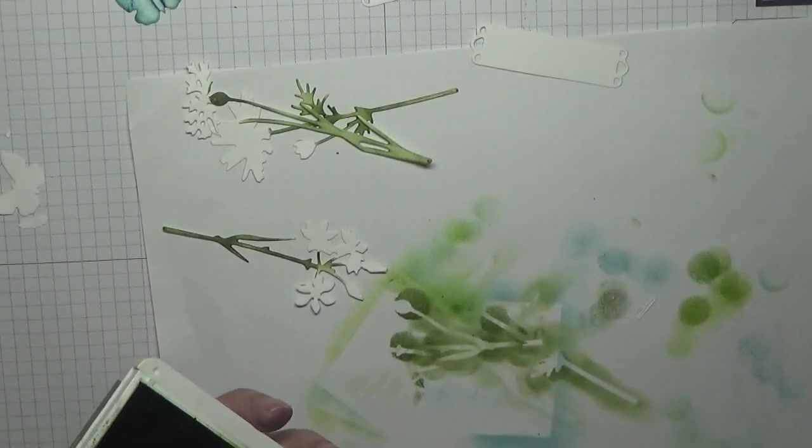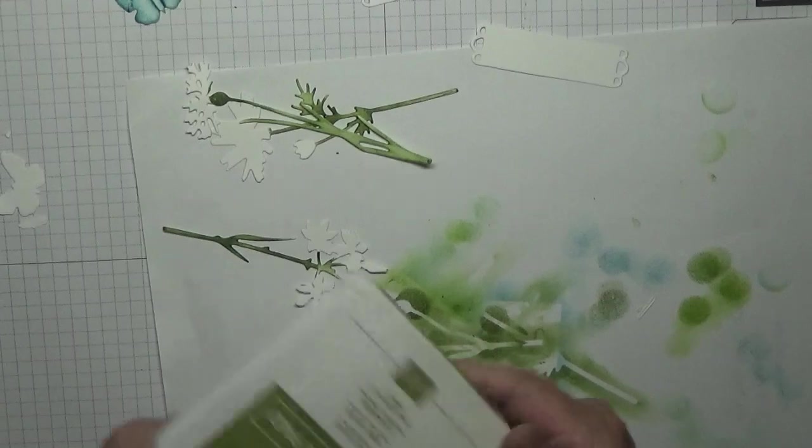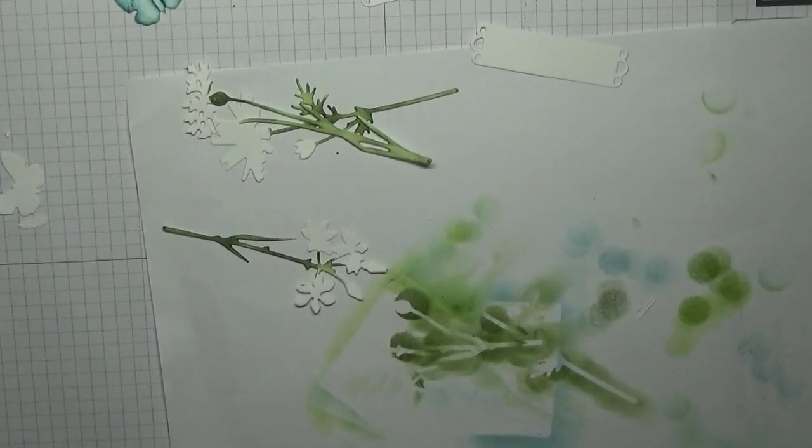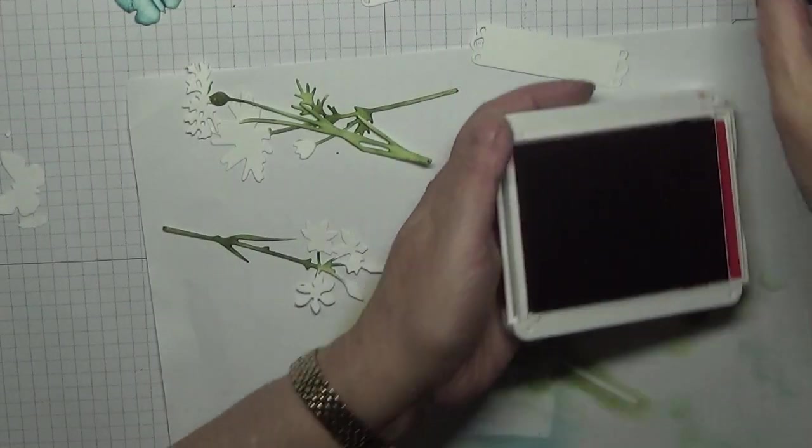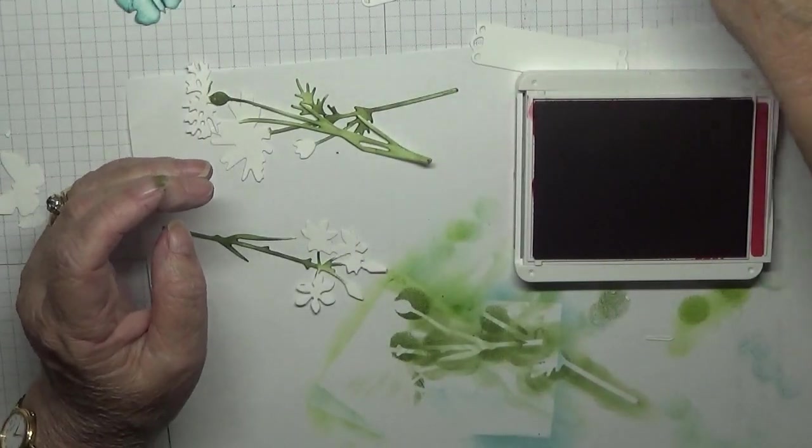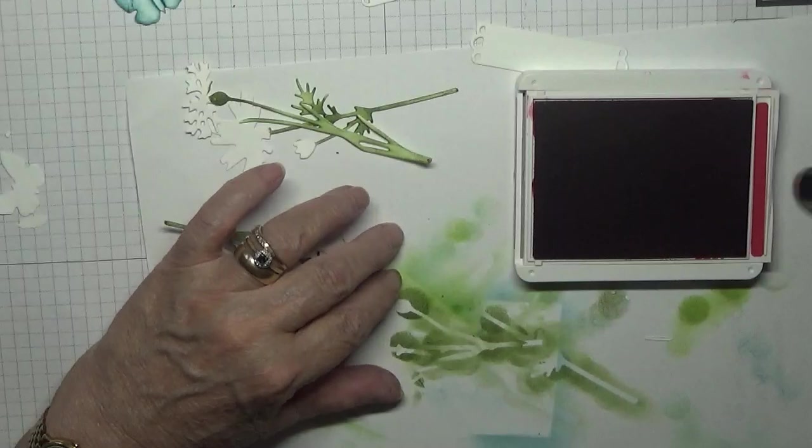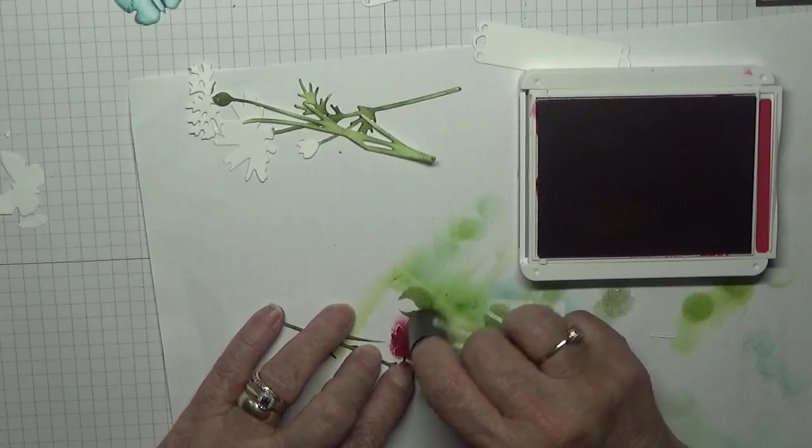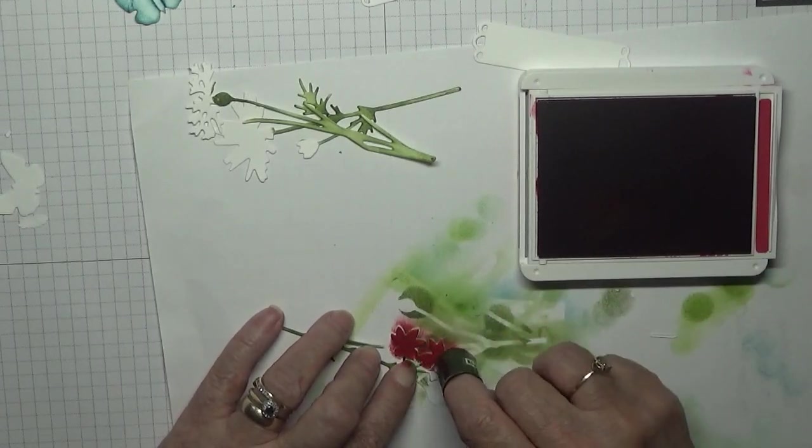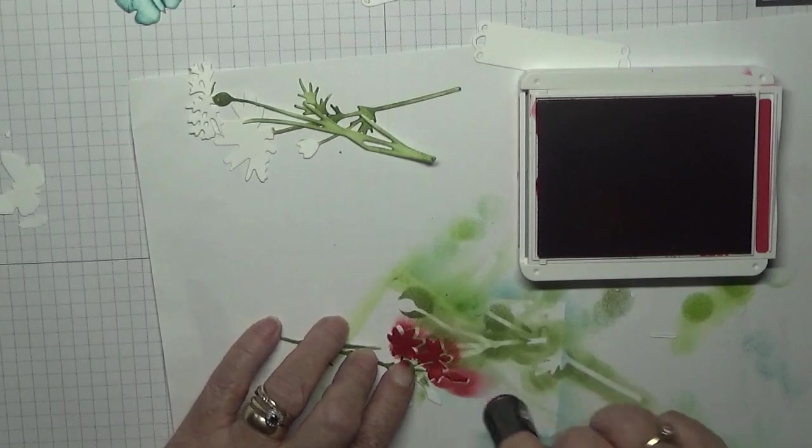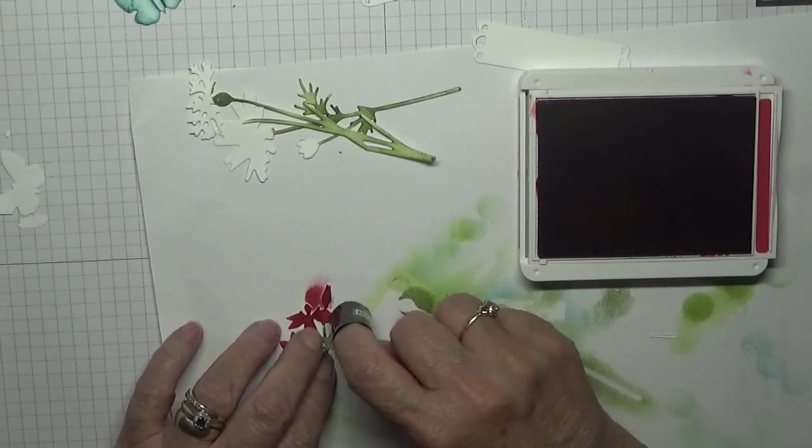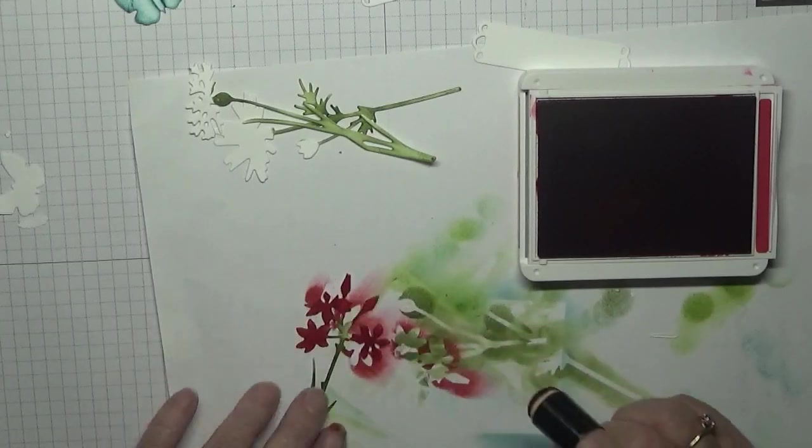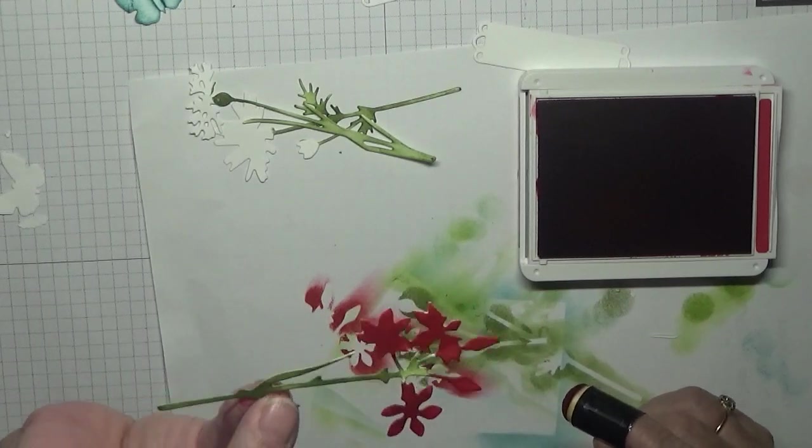And then we just need to color in the flowers. So we've got a Real Red for this one. And we're going to... that's our red flowered one.